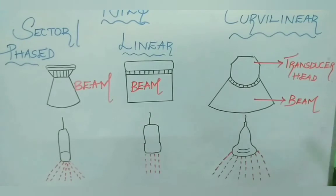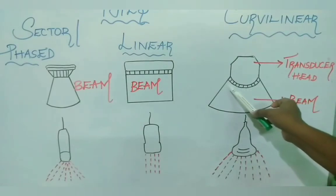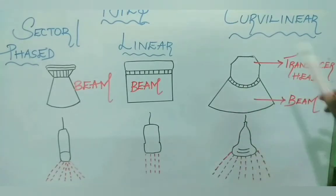Next is convex array or curvilinear or curved linear array transducer probe. Here multiple piezoelectric crystals or elements are arranged along a curved transducer head. They are useful for more in-depth examinations like musculoskeletal or abdominal examinations.